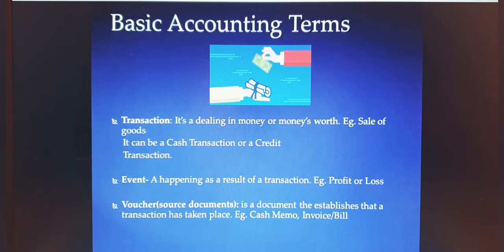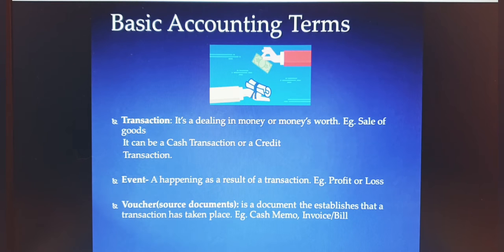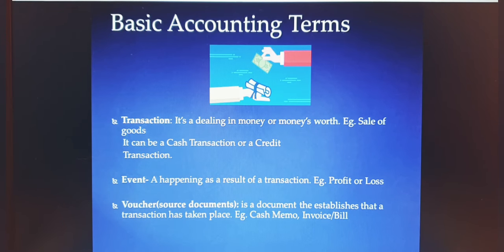The next term is 'event' — a happening as a result of a transaction. When you purchase goods, that is a transaction. Suppose you could not sell all the goods and some stock remains — that remaining inventory is an event because it is the result of a transaction. If you make a profit or a loss, that is also an event, because it is the ultimate result of all transactions put together at the end of the year.